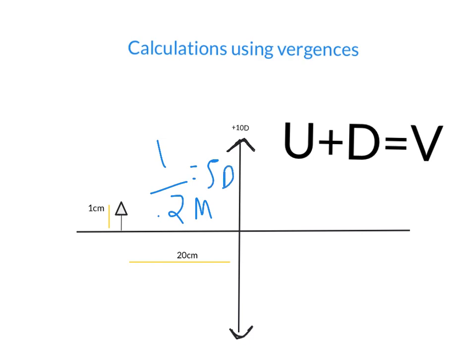In this case, it's actually minus 5 diopters. Minus 5 diopters because the vergence that hits the lens, the vergence of the object is diverging. It's a diverging vergence.